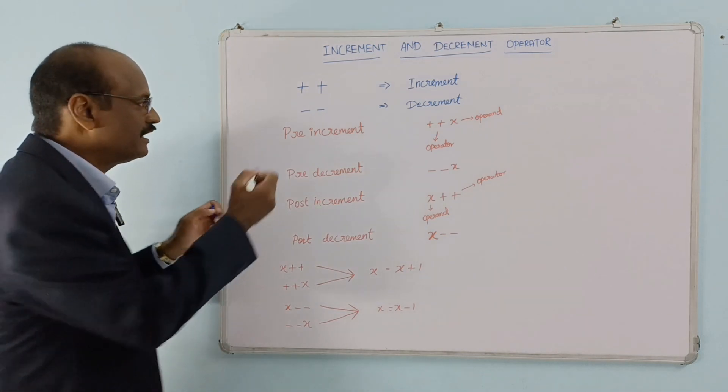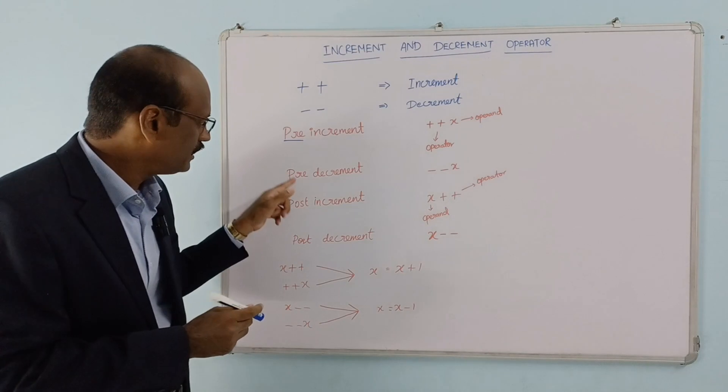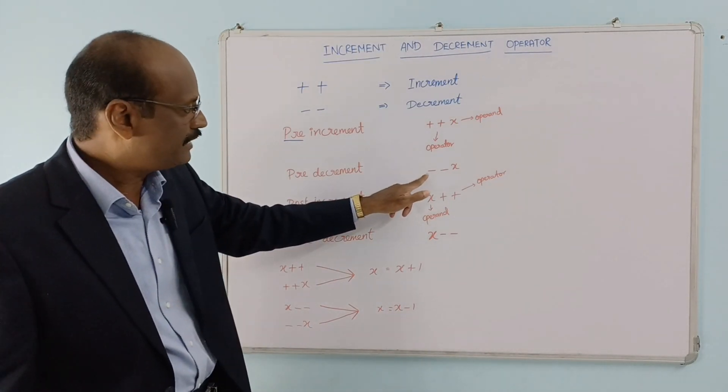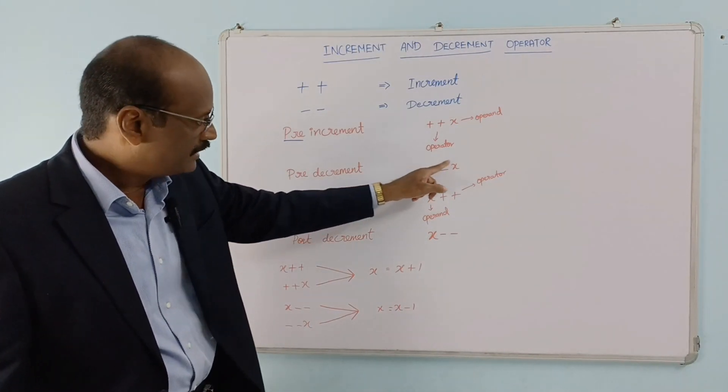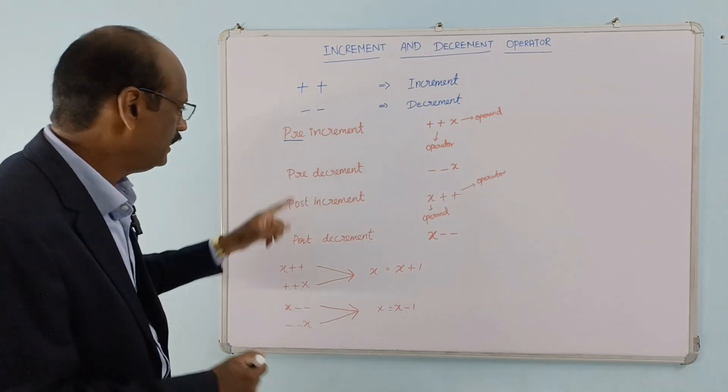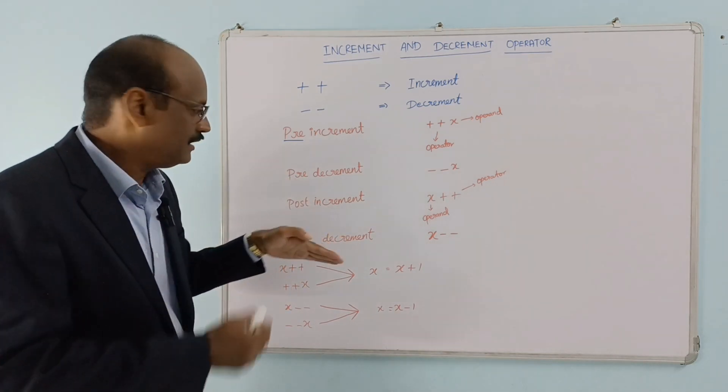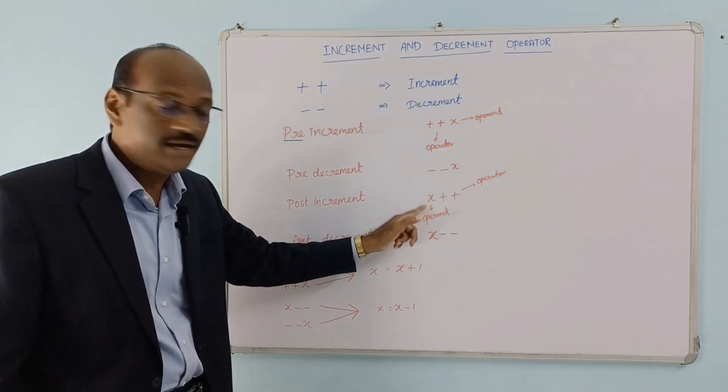For pre-decrement, we use the naming convention where the decrement operator comes before the operand. The decrement operator (--) is followed by the operand, written as --x.